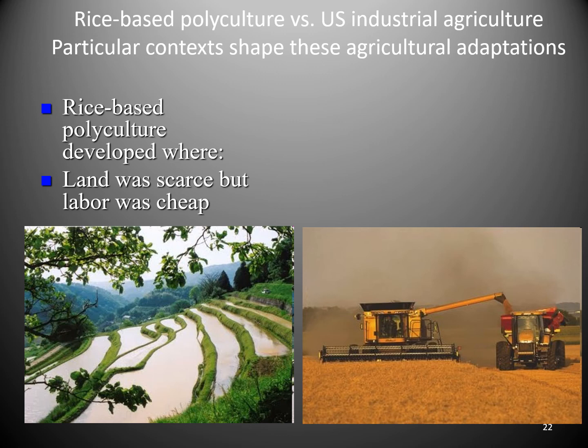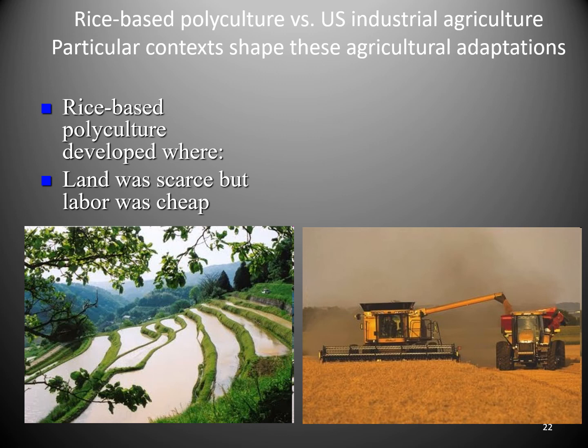Rice-based polyculture developed where land was really scarce — there wasn't room to spread out — but labor was cheap. So you intensify: use the same plot of land but put more labor and effort into it to get more food. In the US, agriculture developed where land was cheap — mainly because we stole and appropriated most of it from Native Americans — and labor was expensive. So instead of hiring many people to farm the same area, you spread out, use a lot of land and not a lot of people to grow food. Two different paths to intensification, or growing more food: intensification and extensification both inherently simplify the ecosystem.